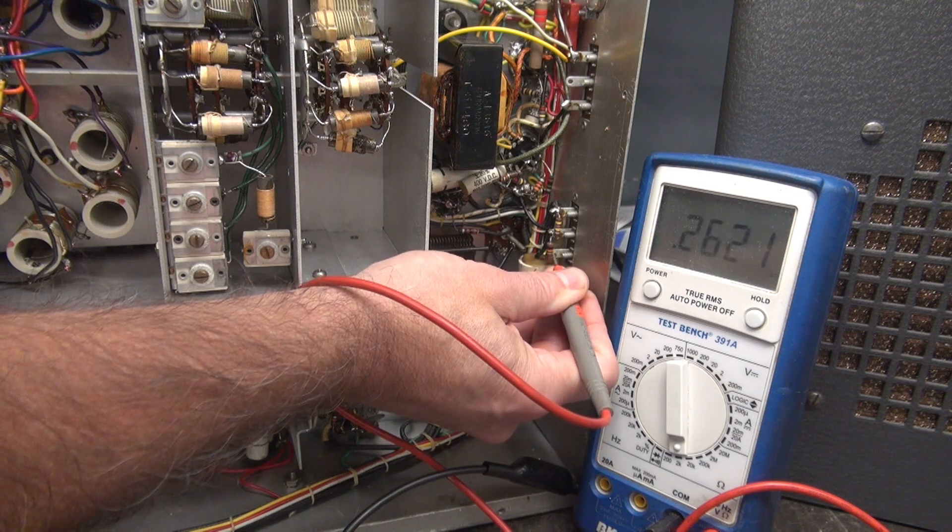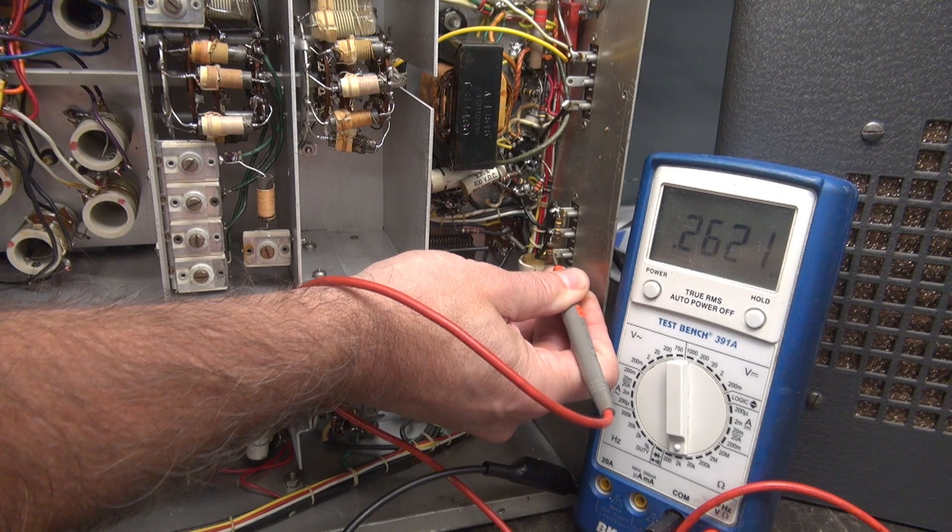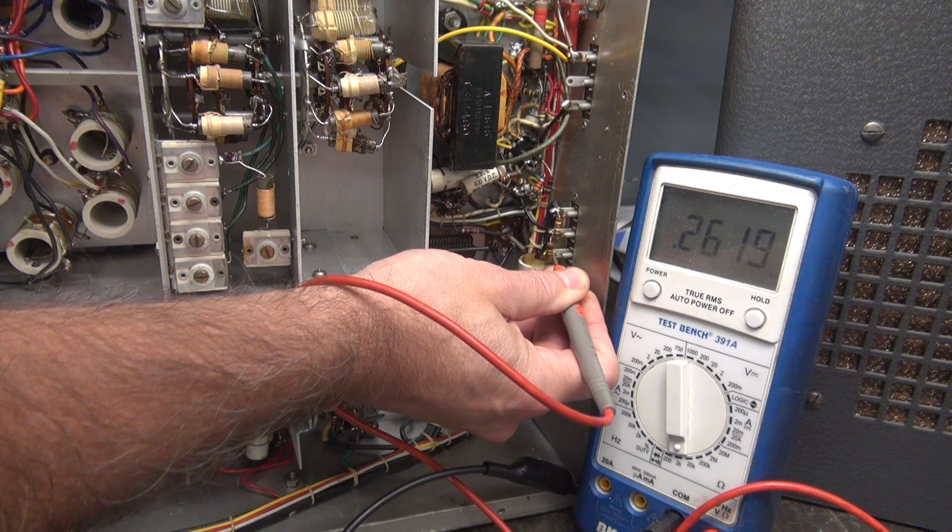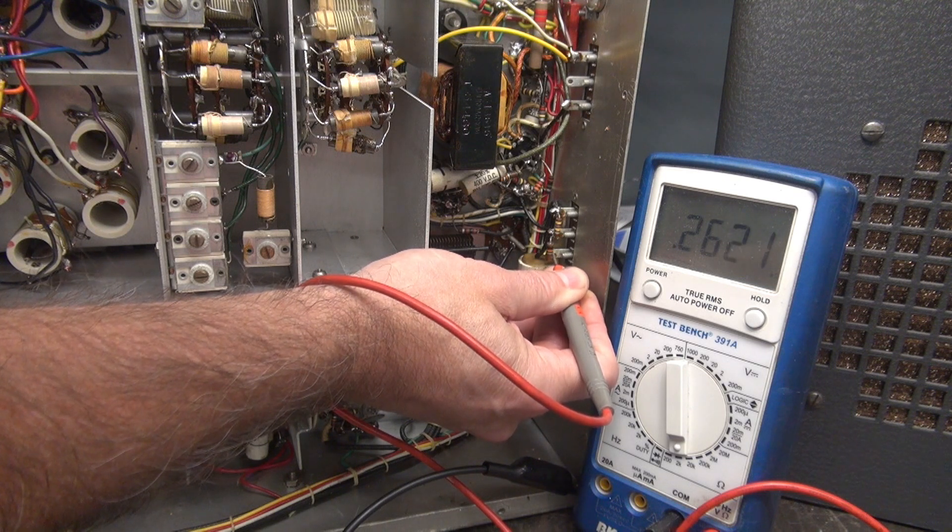So somewhere else, we have a low resistance path to ground. And that is why the 6AQ5 audio output tube is not shutting off.